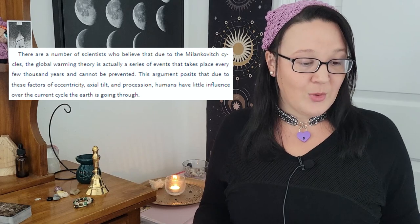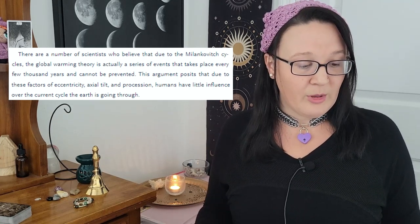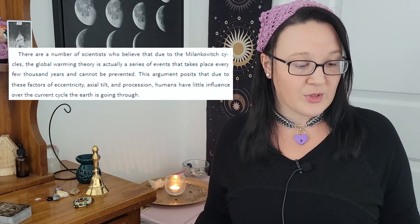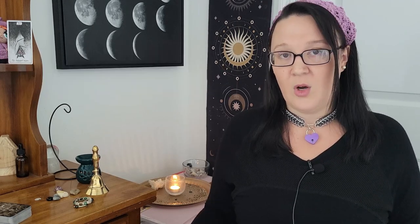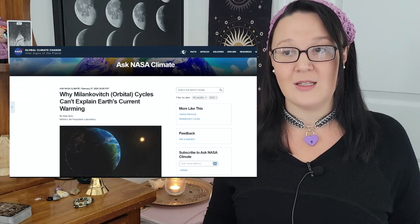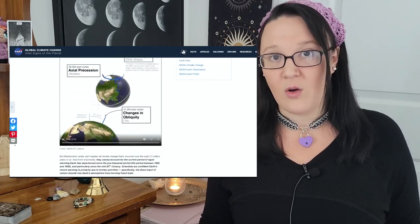Anything written as fact, or anything scientific or historical in nature, should either have a source or you should be able to prove it. Here's an example from Year of the Witch: a scientific claim without a source. It says there are scientists who believe that due to the Milankovitch cycles — involving eccentricity, axial tilt, and precession — global warming is a recurring series of events that humans have little influence over. There's no source cited, and preliminary searches from reputable sources like NASA show this claim has been proven false.